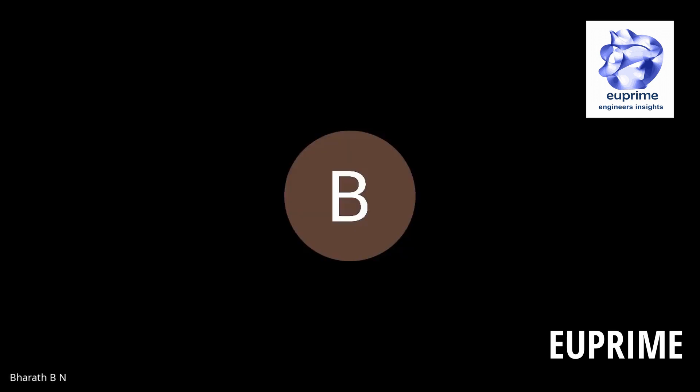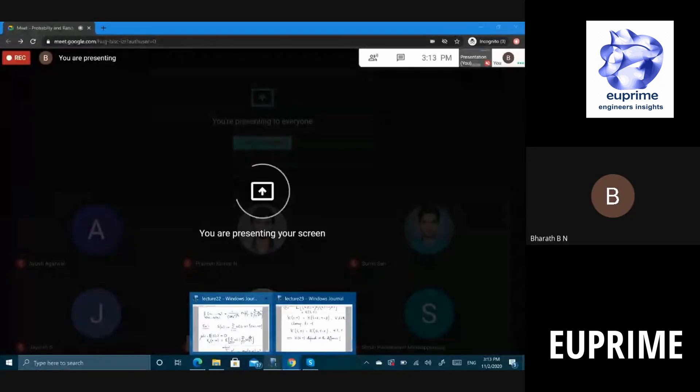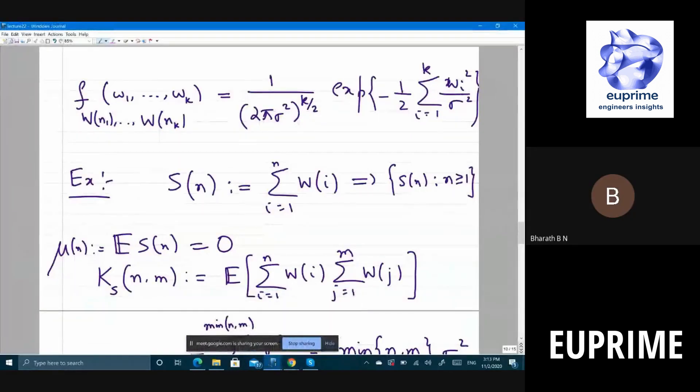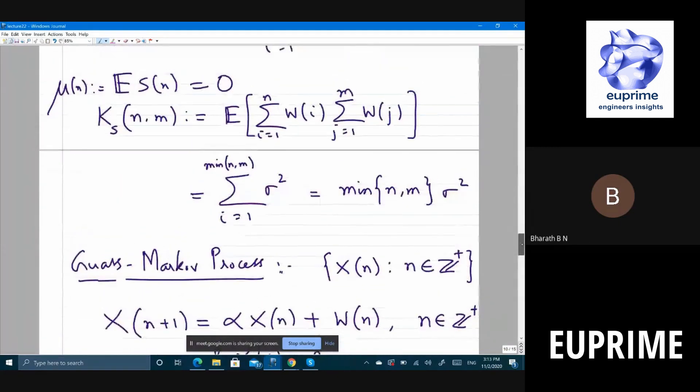I'll just stop presenting and share again. Now you can see, right? So this is the sum process that we looked at in the last class. What can you say about this? Do you think this is stationary?